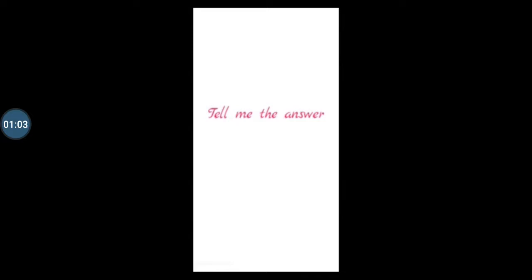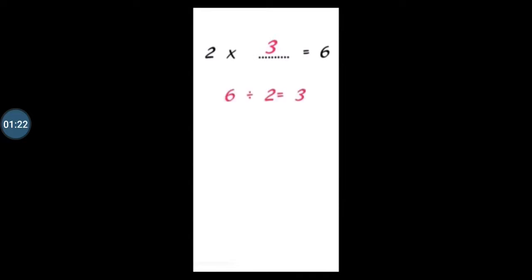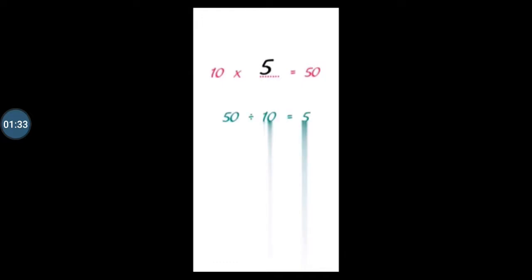First of all, tell me the answer of this question: 2 × ? = 6. By which number should we multiply 2 to get 6? Yes — 3. 2 multiplied by 3 equals 6, or we can say 6 ÷ 2 equals 3. Here is one more question: 10 × 5 = 50, or 50 ÷ 10 = 5.